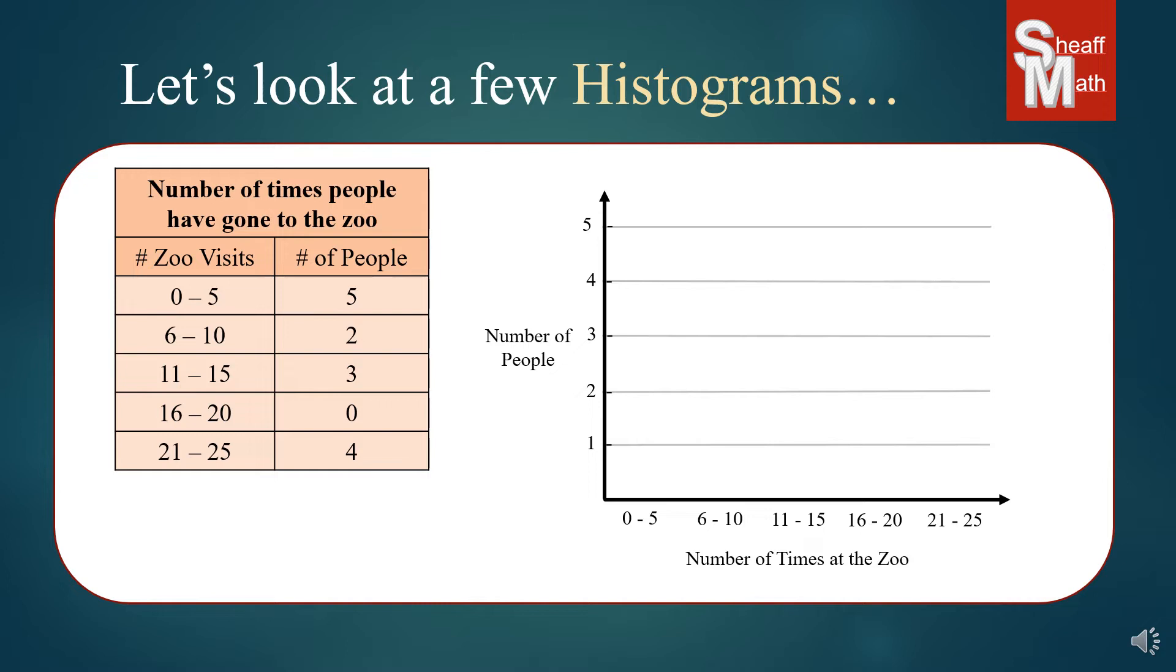This says the number of times people have gone to the zoo, and so on the left side, it shows from zero to five times, from six to ten, from eleven to fifteen, and then on the right, it shows how many people in the survey fit into that category. So, the first one, we have the people who only went zero to five times. There were five of them, and so we're going to create a bar that goes all the way up to five, above that zero to five category.